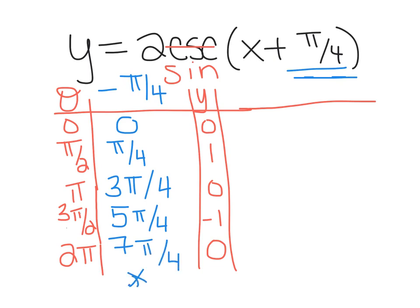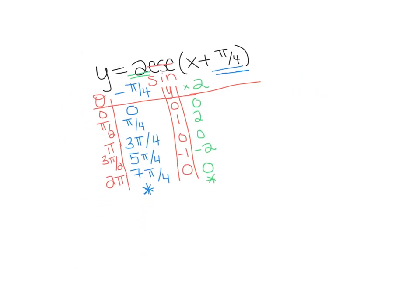Put a star here because it's my final column. Then we look at the outside of the equation: there's a 2, so we multiply all the y-values by 2. That gives us 0, 2, 0, negative 2, and 0. Star here — so there's my table.